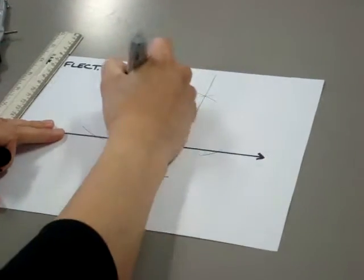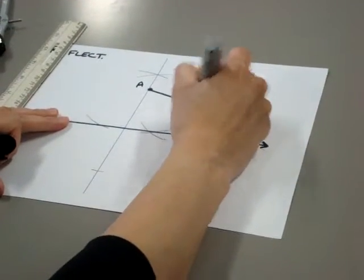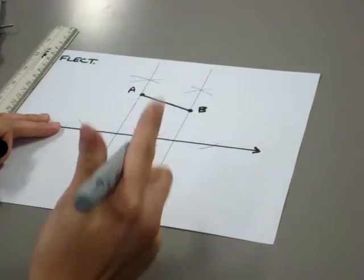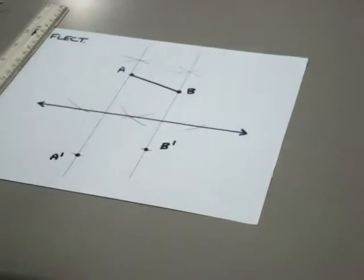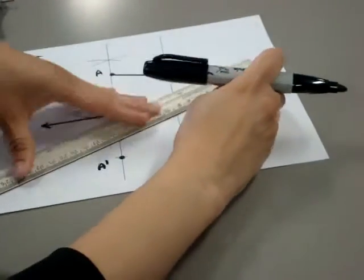Therefore, if these two points are called A and B, for line segment AB, down here will be A' and B'. Connecting A' with B' will be my new line segment that has been reflected.